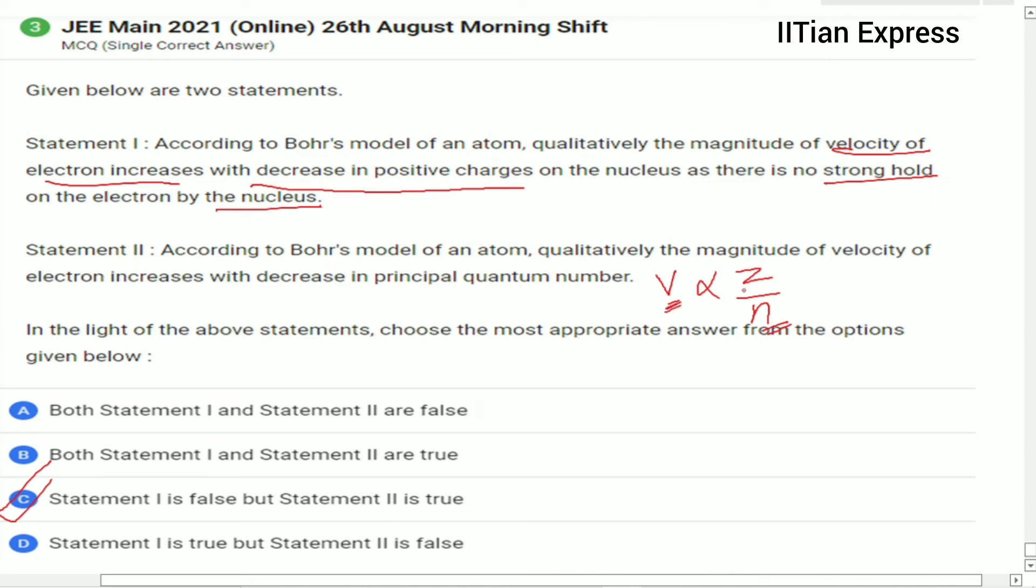From here we can say if Z is increasing then velocity will also increase. If n is increasing then velocity will be decreasing, or we can say if n is decreasing then velocity will be increasing.